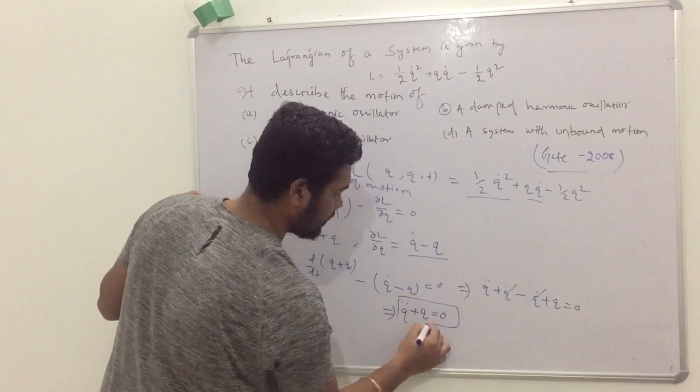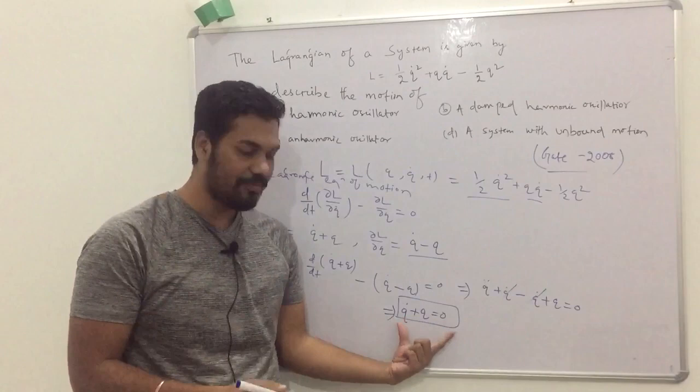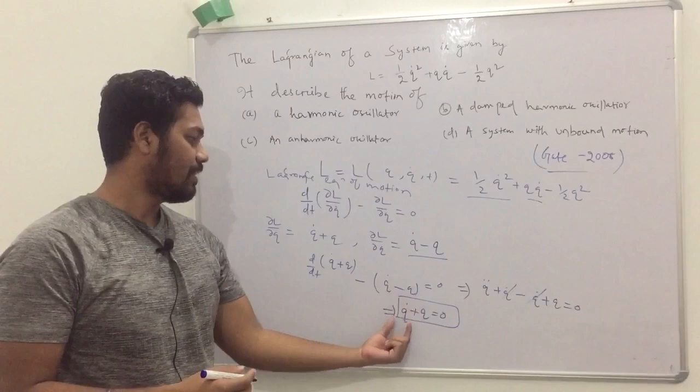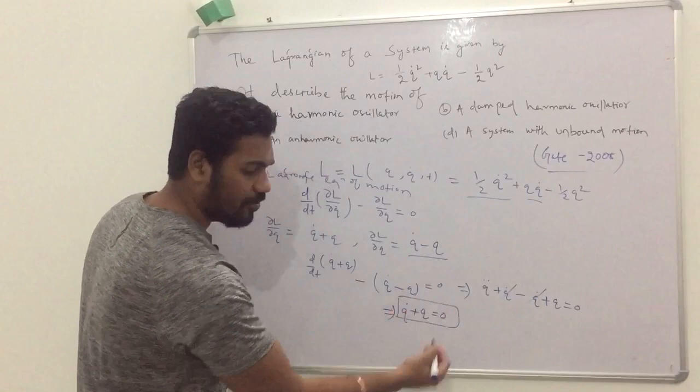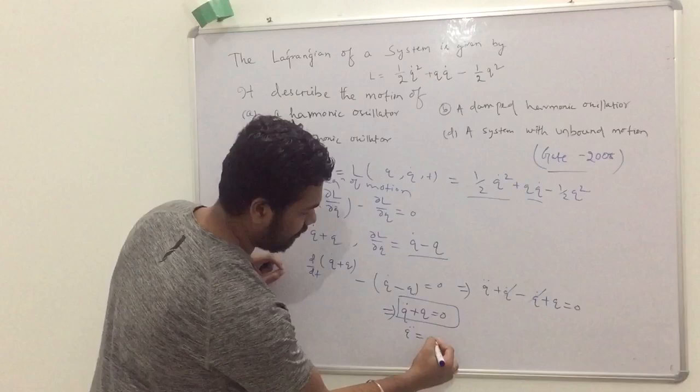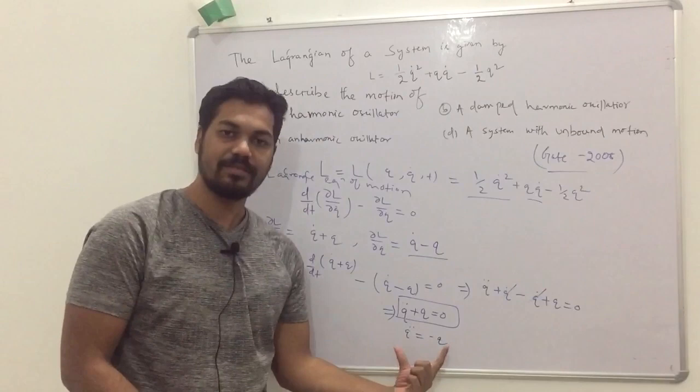This represents the equation of motion. Q double dot is acceleration and Q is displacement. For a unit mass system, the force is proportional to negative displacement. This is the equation of a simple harmonic oscillator.